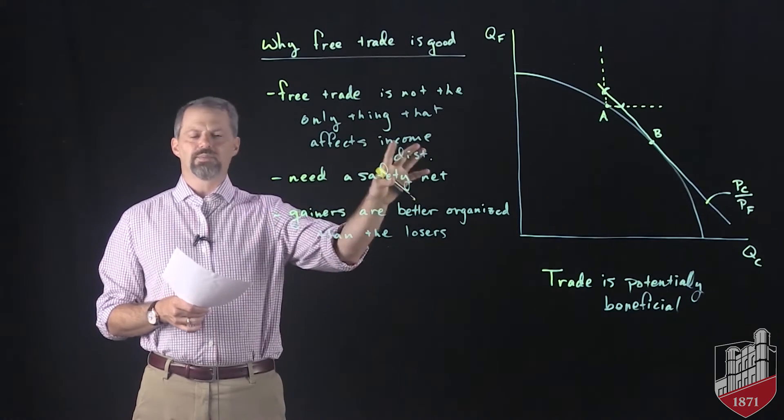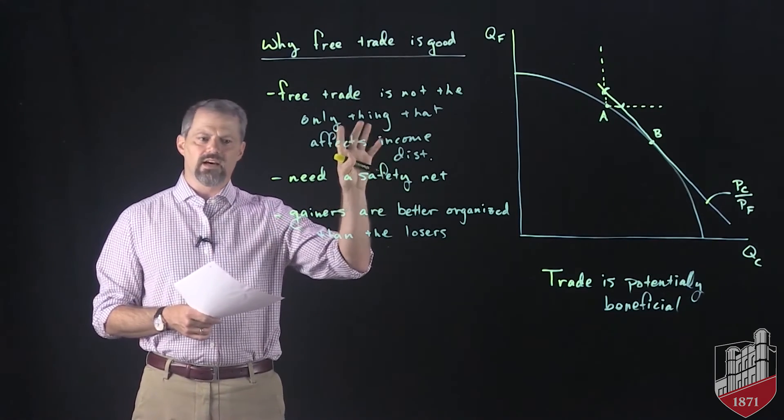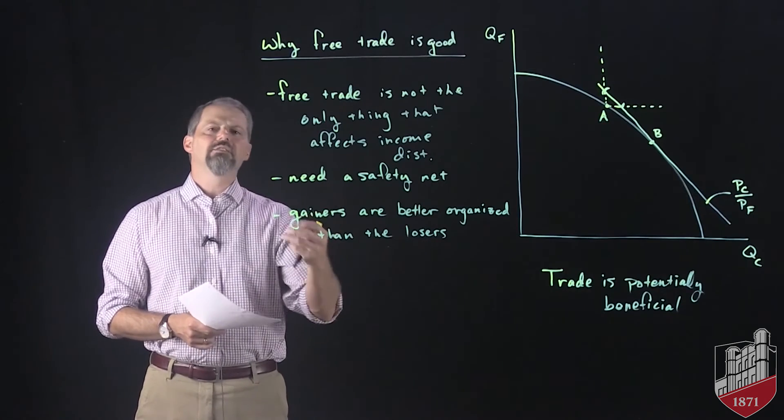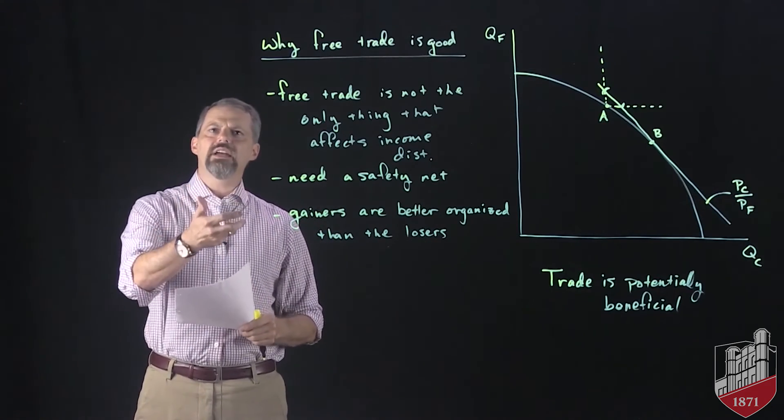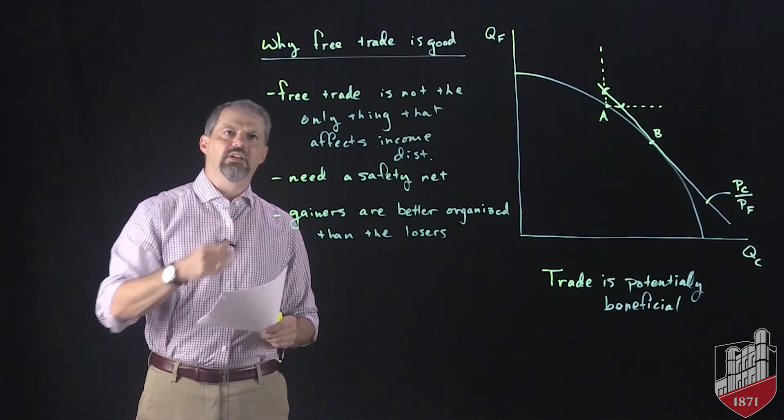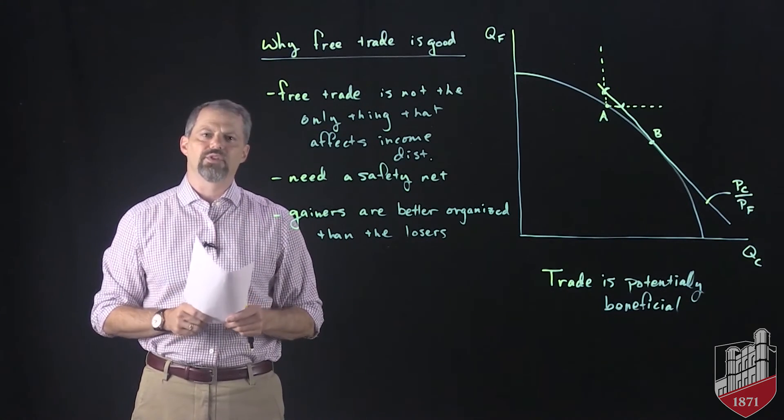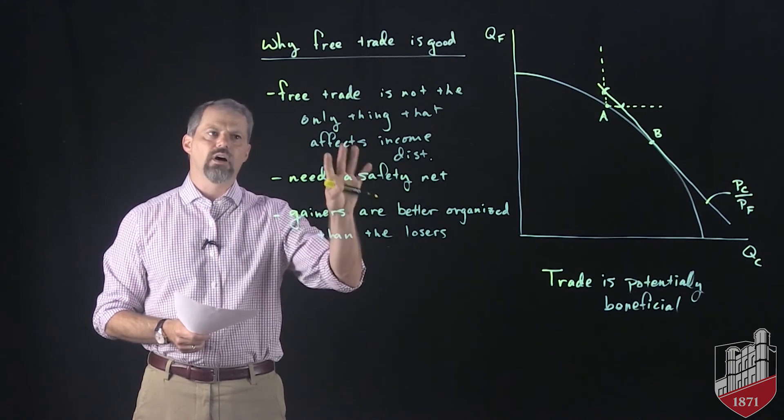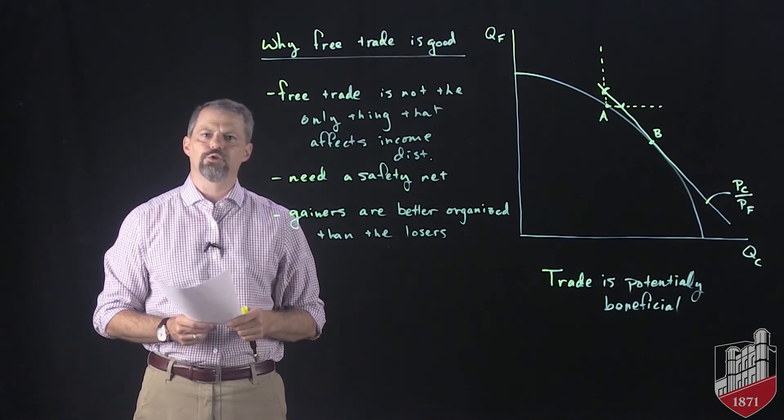So that's the end of this specific factors model. We'll develop some of these ideas in future chapters and future discussions, but this gives you a good idea of why trade oftentimes is supported by some groups and opposed by other groups. We'll talk more about some other models of trade in future videos.